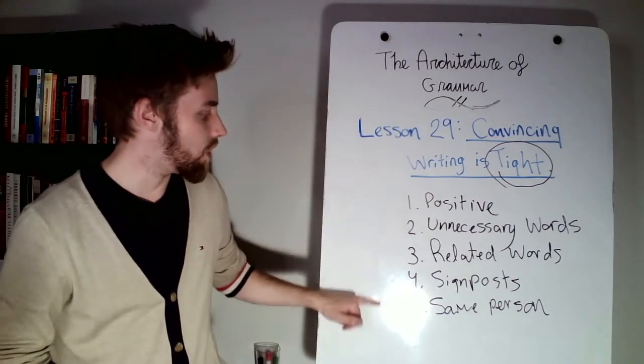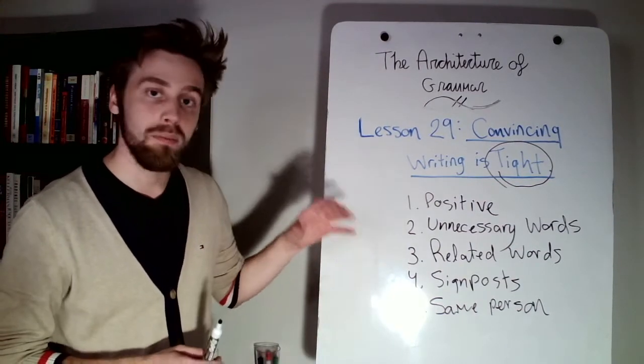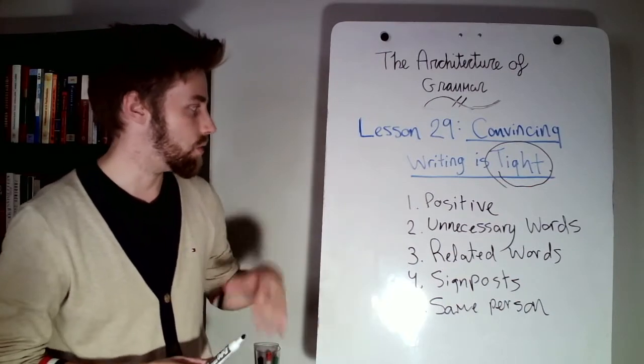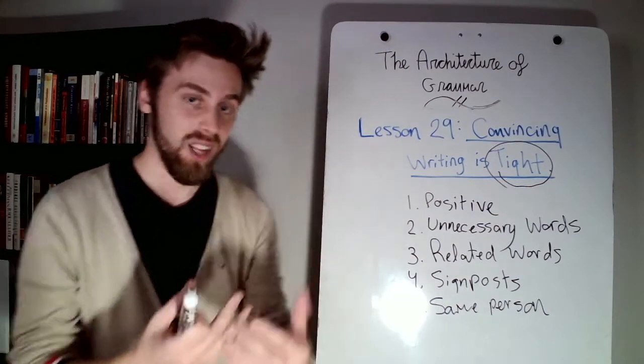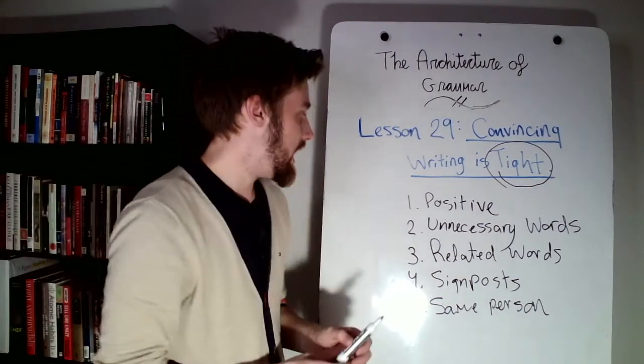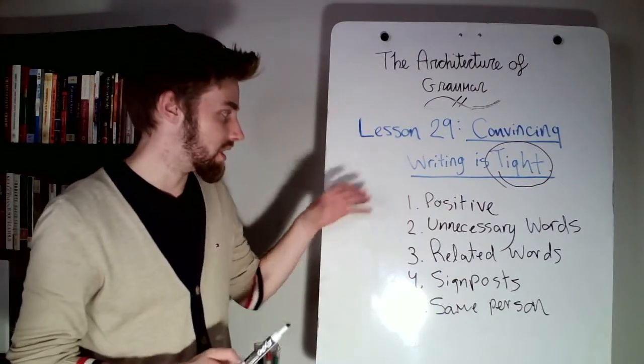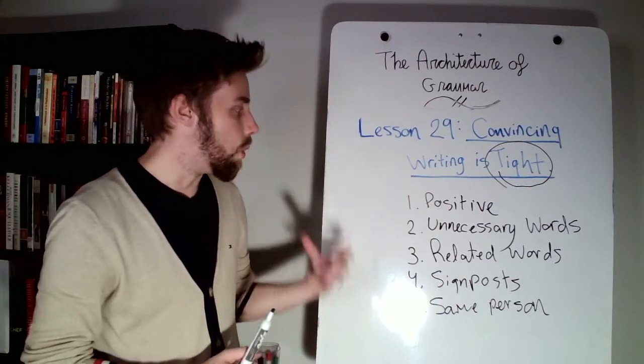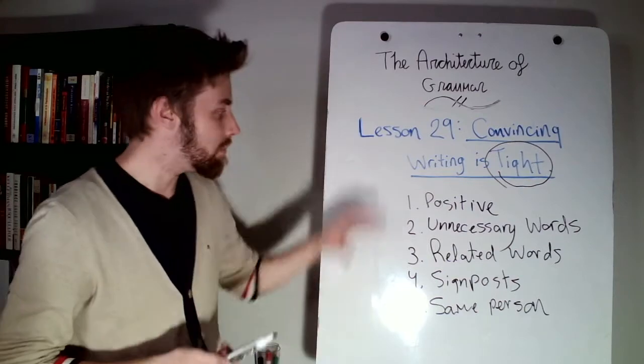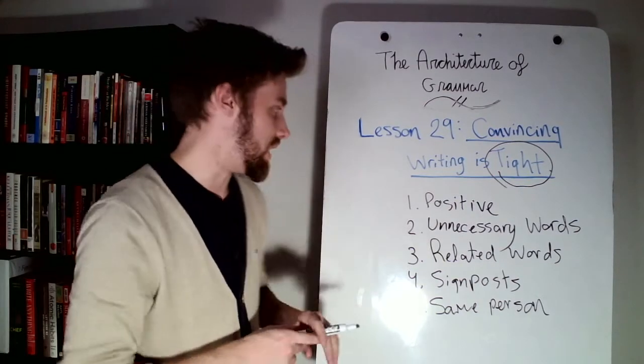We're going to talk about the five most important aspects of writing and what makes it tight or what makes it convincing. In lesson 29 of the architecture of grammar, you'll find more elements. But these are the most important ones that we're going to address in this video.